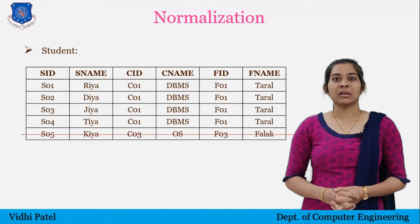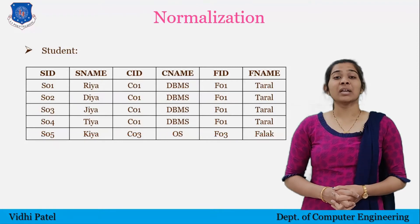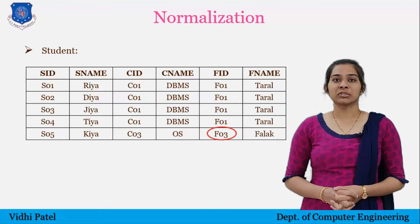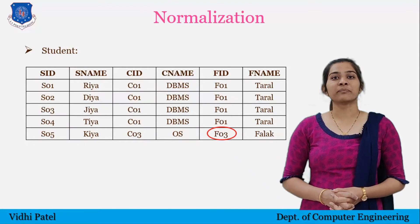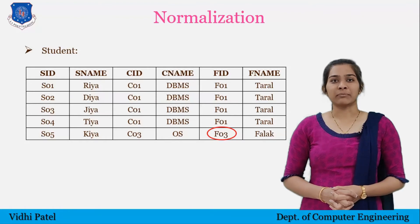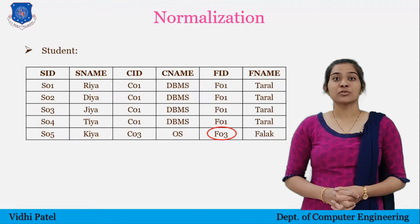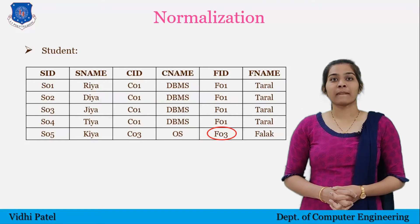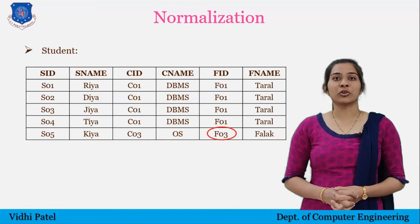That deleted information is not recoverable later. Now let's see update anomalies. If I want to update a student name, there is no problem. But if I want to change the faculty name of faculty ID F03, then it will change throughout the whole table wherever FID equals F03, which consumes more time. There is only one faculty whose faculty ID is F03, so the update operation should be performed only once. But due to column level duplicacy, the data is changed more than one time, causing updation anomalies. We can solve these problems using the normalization technique.